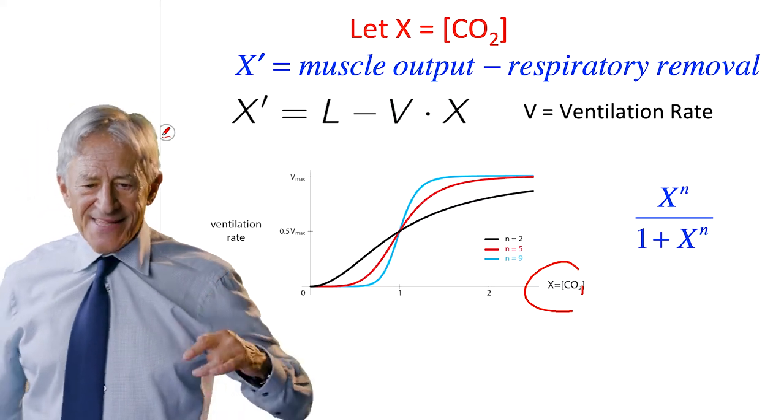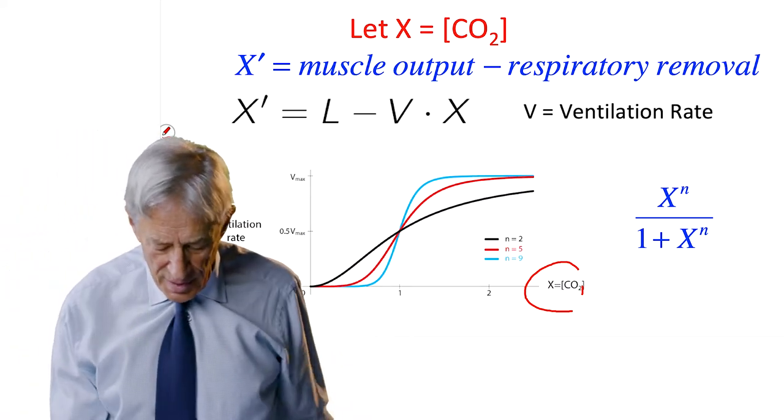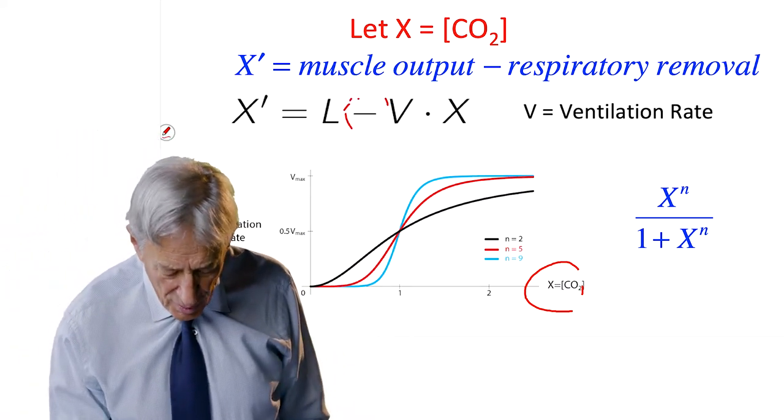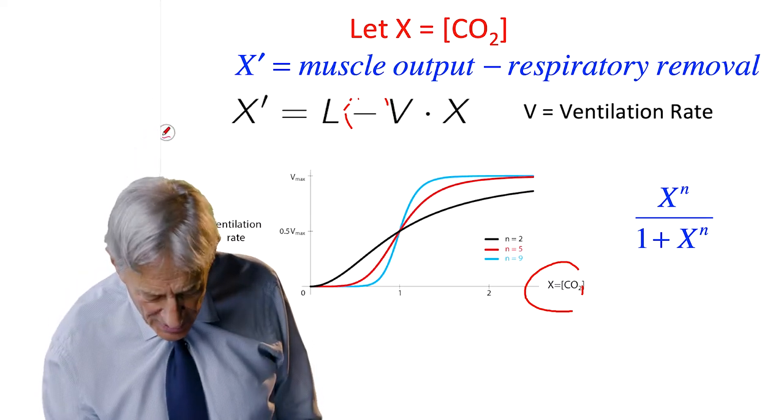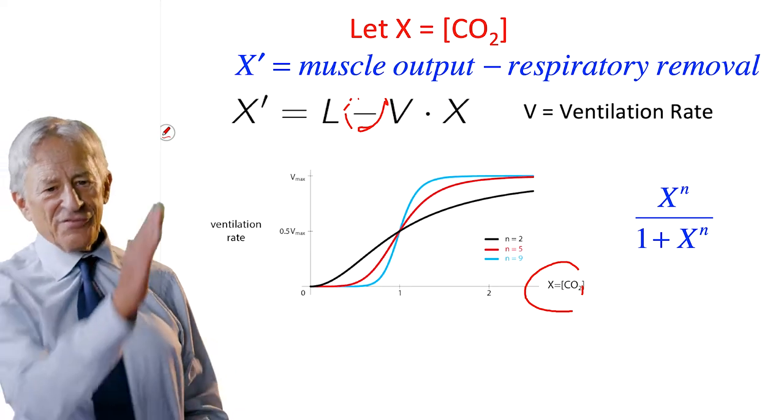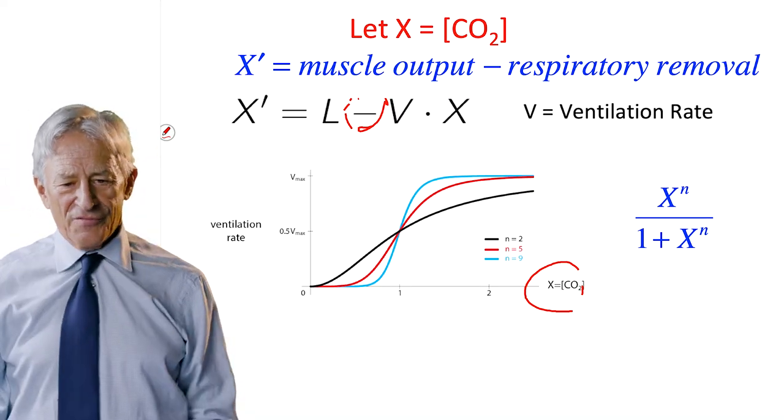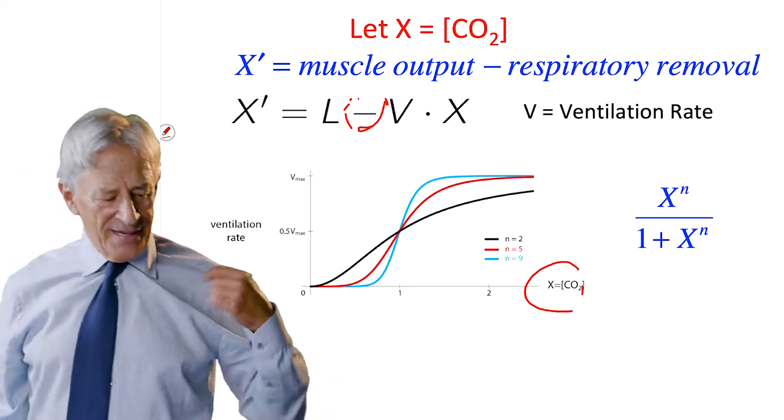Now I said this is negative feedback, but it's an upgoing sigmoid. But that's not a problem, because it's an upgoing sigmoid with a minus sign in front of it. And so by having a minus sign in front of it, this is negative feedback, even though the curve is going up. The curve is going up, indicating that the removal rate is going to increase.